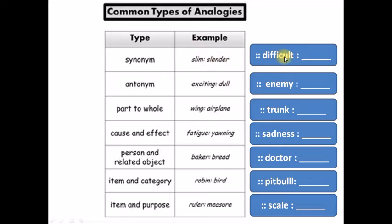Another type of analogy is antonym, words that are opposite in meaning. For example, you're given exciting is to dull. What is the relationship? They are antonyms. So in order to complete this statement, you would have exciting is to dull as enemy. What is the opposite of enemy? The opposite of enemy is friend.